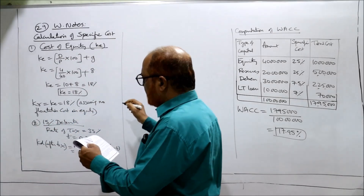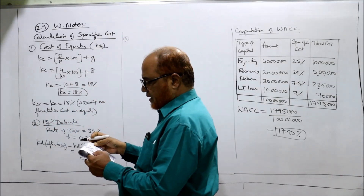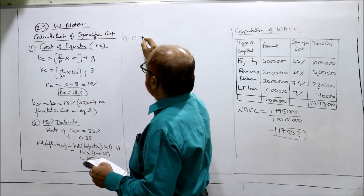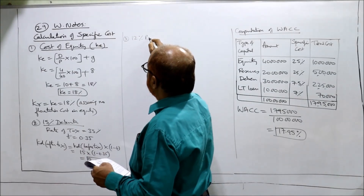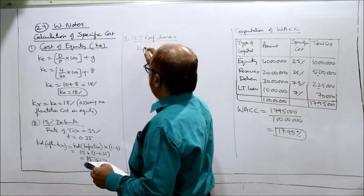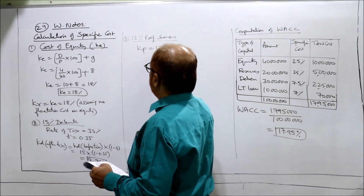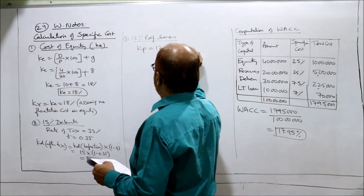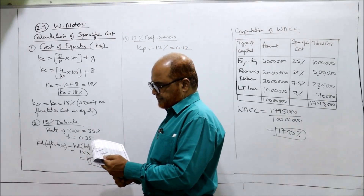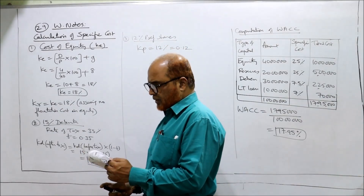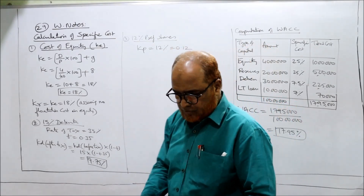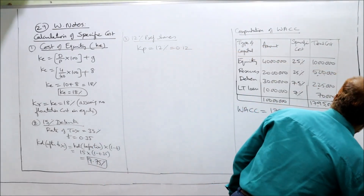Similarly, for 12% preference shares, Kp is equal to 12%. That's it. Now we can calculate the WACC.